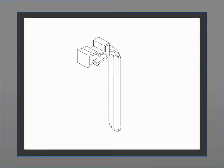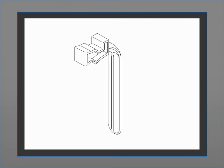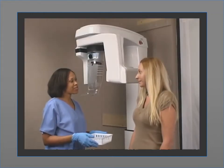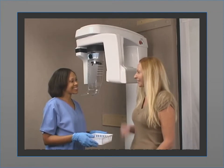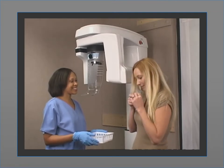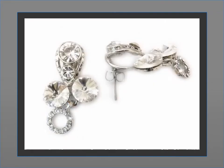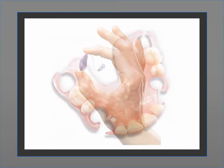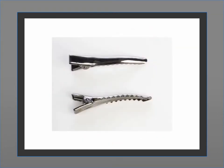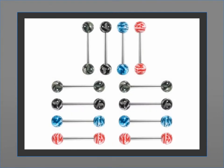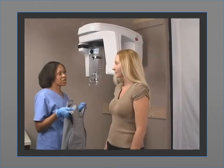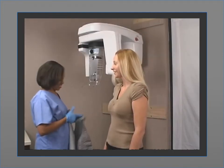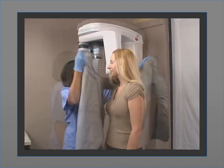For edentulous patients, use an edentulous bite block. Before the patient enters the machine, ask the patient to remove any metal objects above the neck, including jewelry, glasses, hearing aids, prosthesis, metal hair clips, or other metal objects. Place the lead apron on the patient and instruct the patient to stand next to the unit.